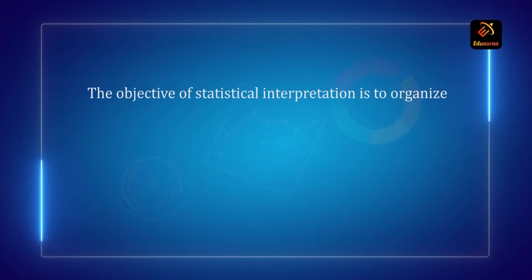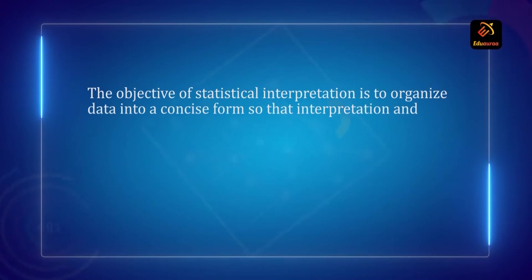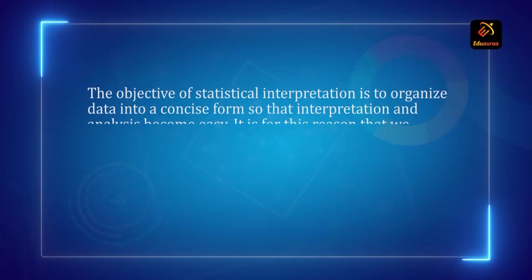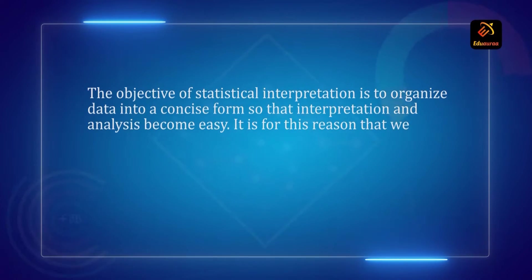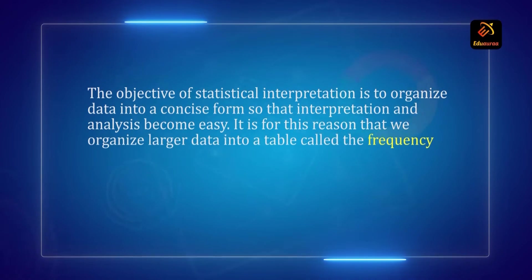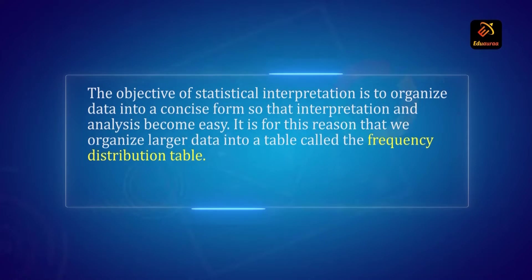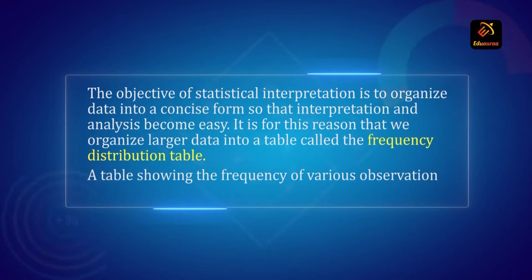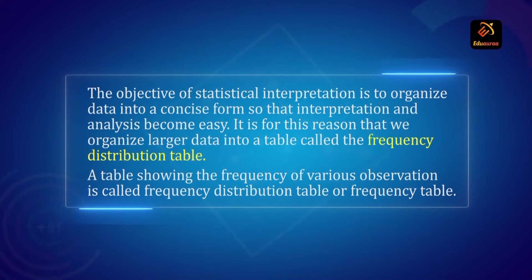The objective of statistical interpretation is to organize data into a concise form so that the interpretation and analysis become easy. It is for this reason that we organize larger data into a table called a frequency distribution table. A table showing the frequency of various observations is called a frequency distribution table or frequency table.